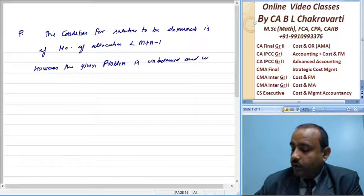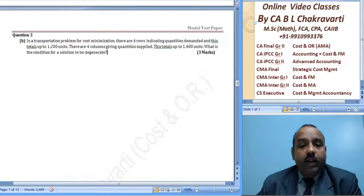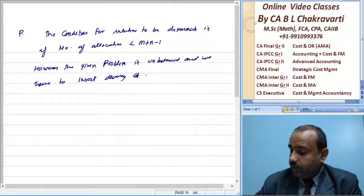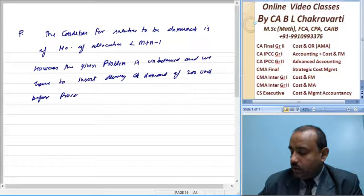We had to insert a dummy supply or demand of 200 units before proceeding for initial basic feasible solution.